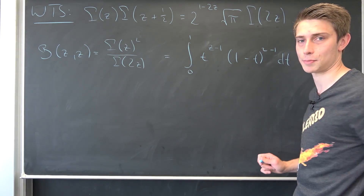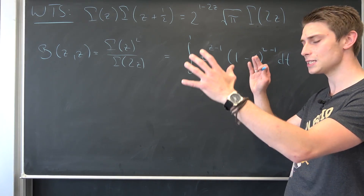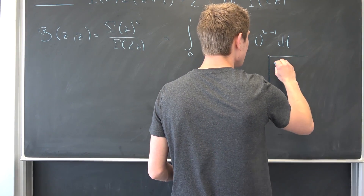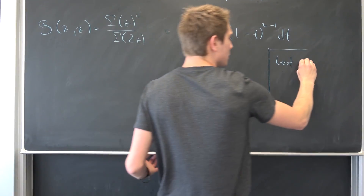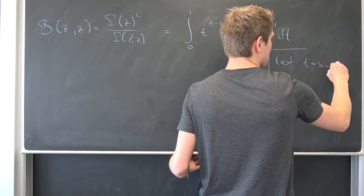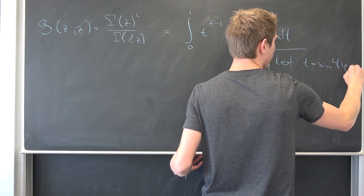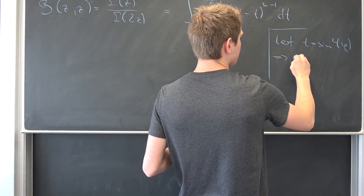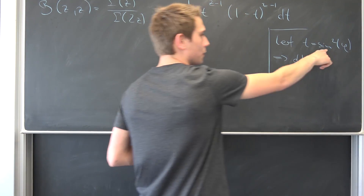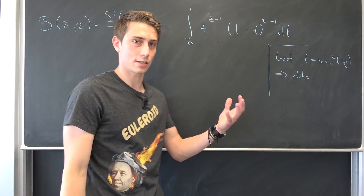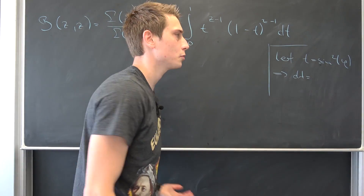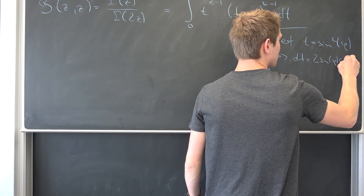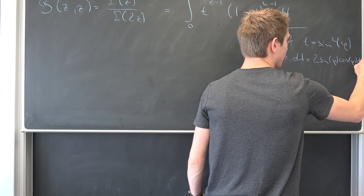That's why we are going to introduce a substitution that will make our life pretty easy. We are going to introduce a trigonometric substitution — namely, let t be equal to sine squared of phi. Meaning if we differentiate that, we get that dt is nothing but 2 times sine of phi times cosine of phi d phi.